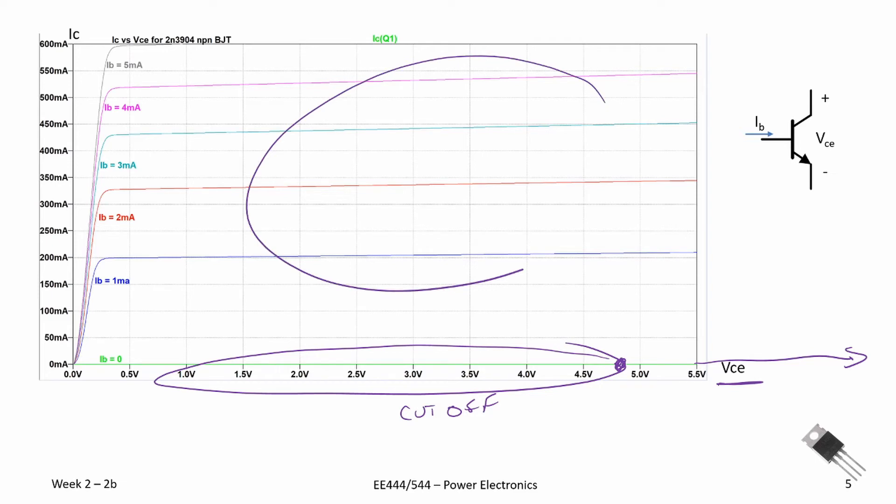This region is called the active region. If we were designing an amplifier, a small signal amplifier, we'd want to be working in that region. And then finally over here, this region is called saturation.